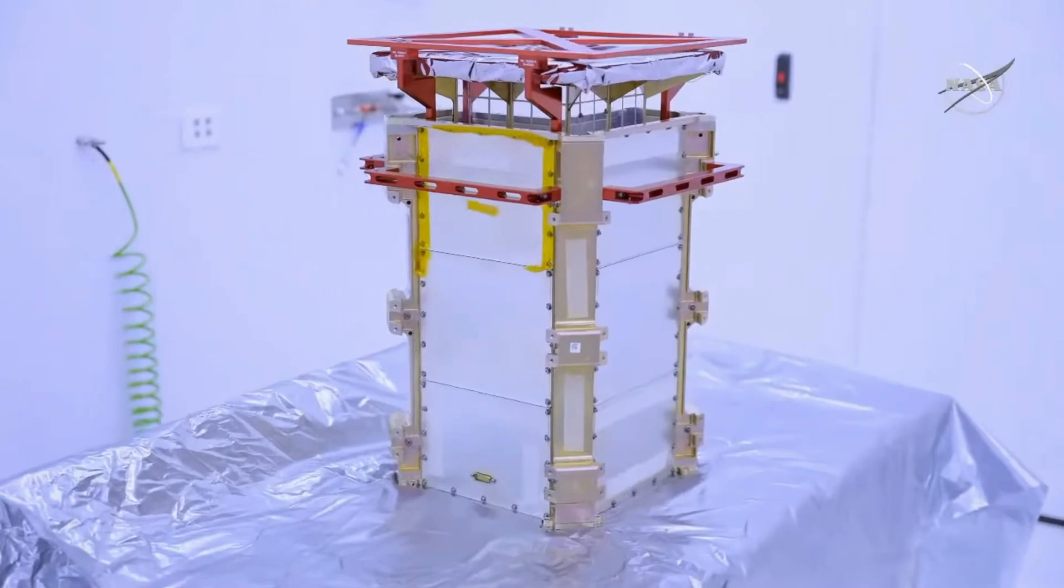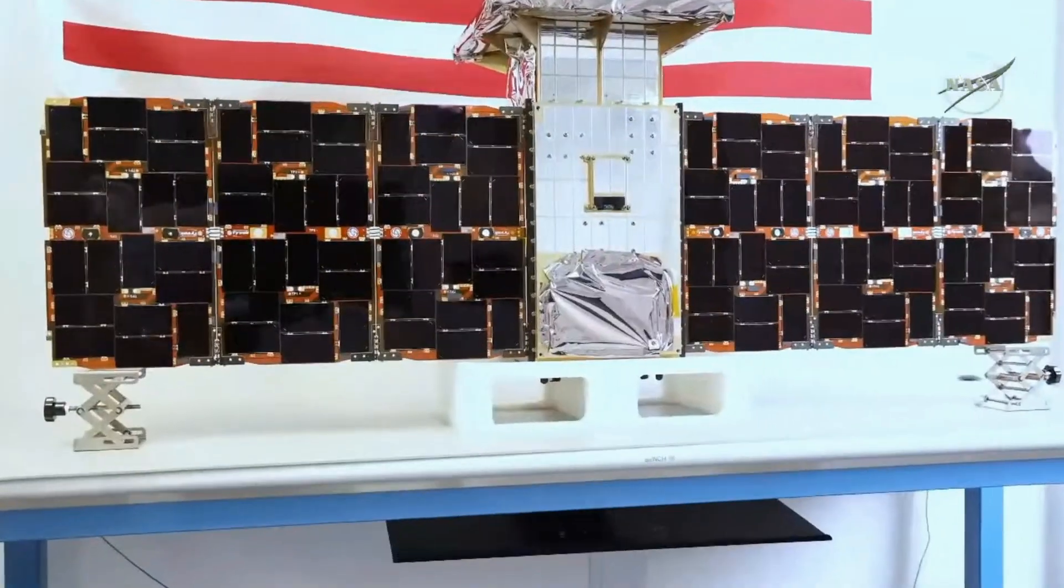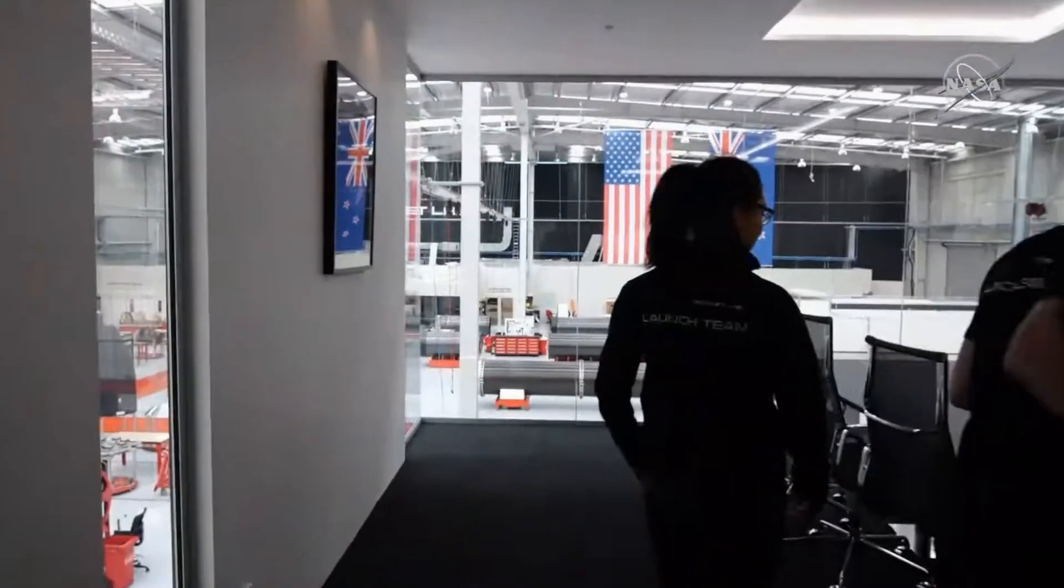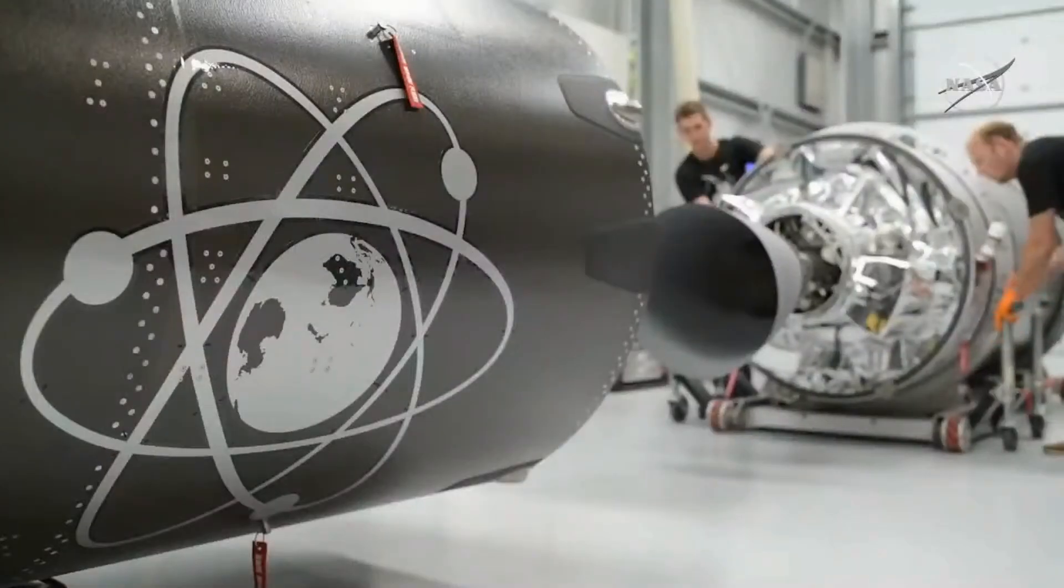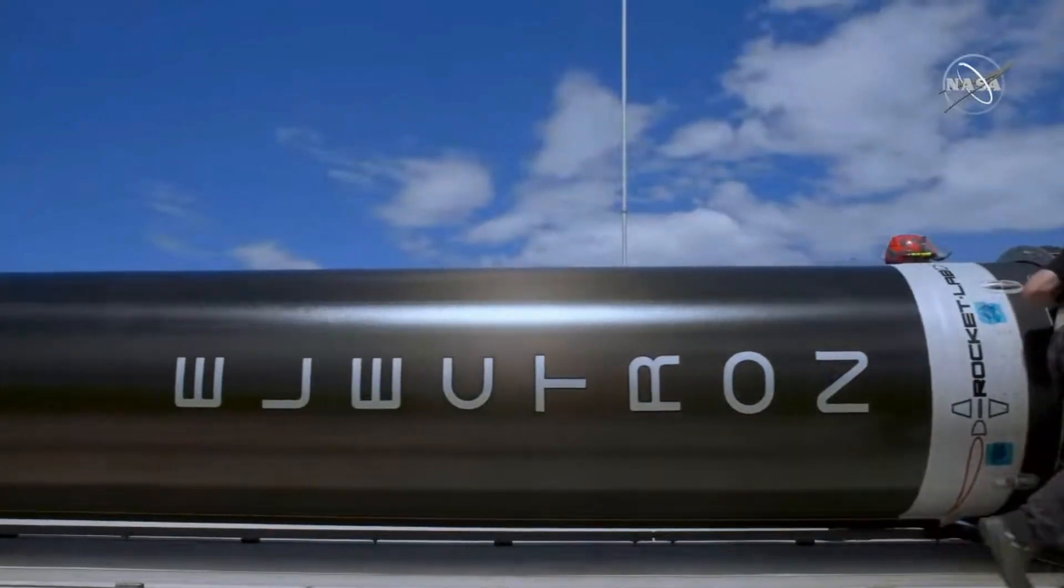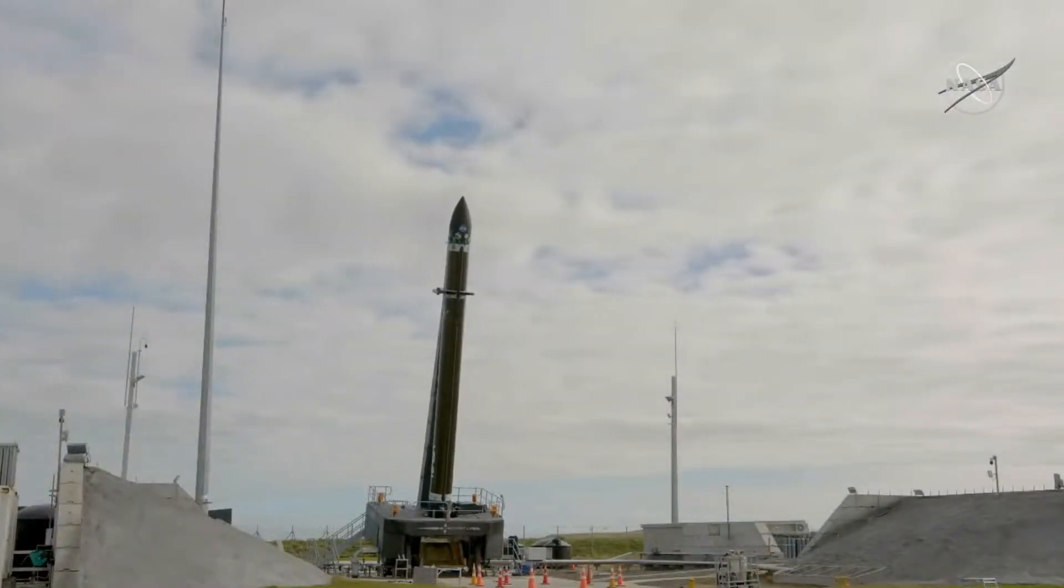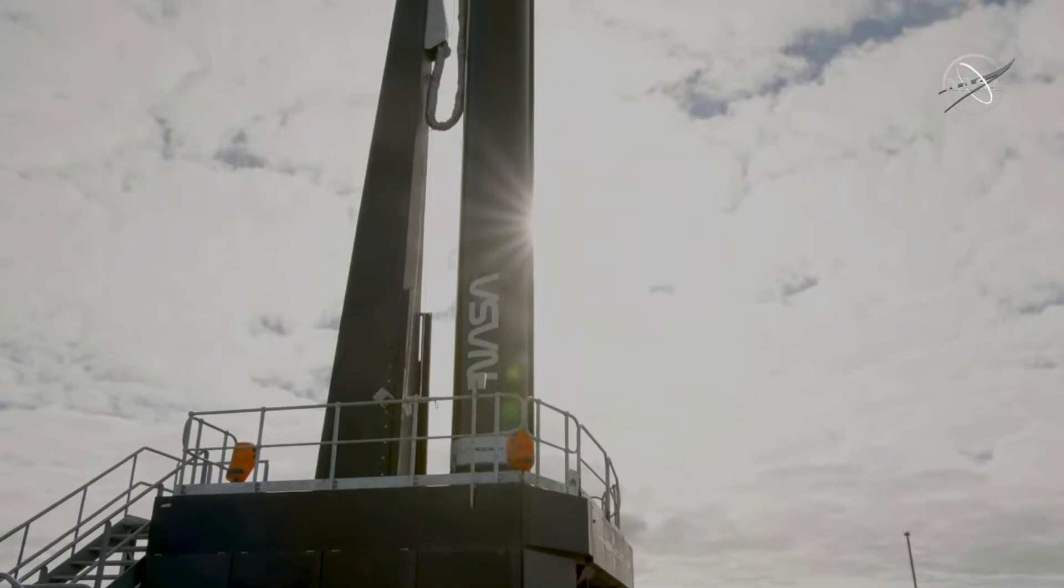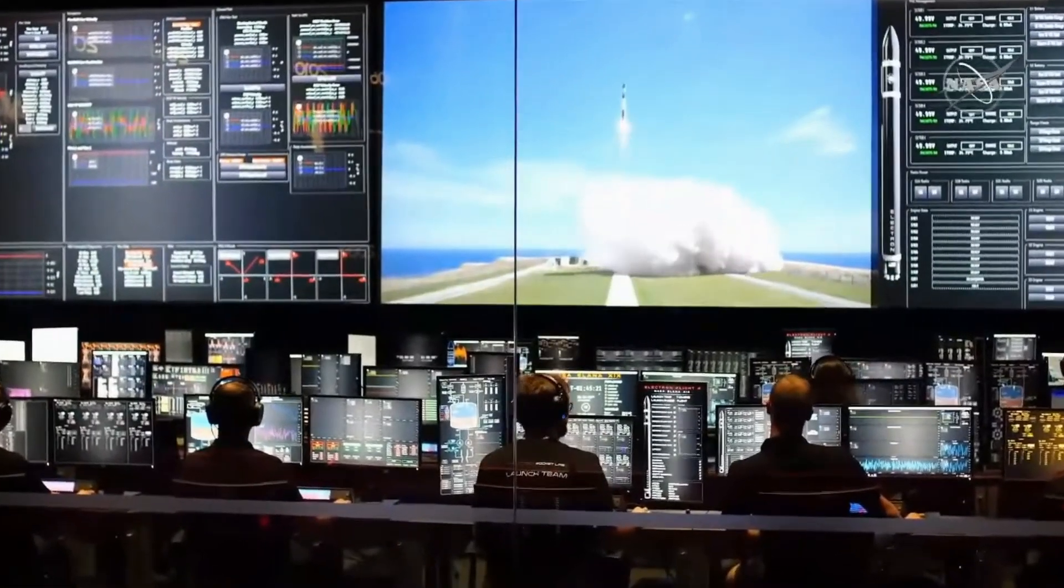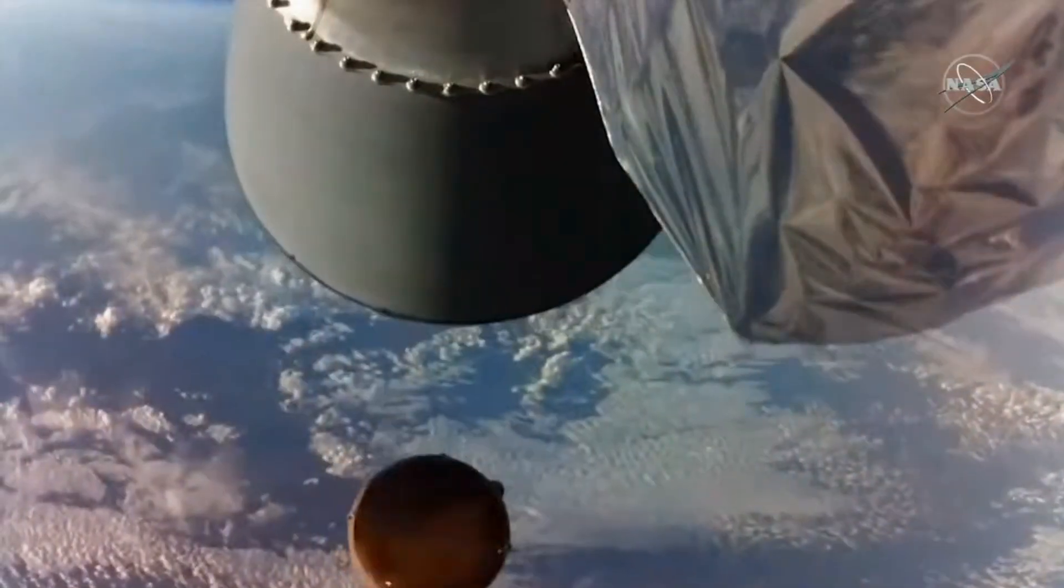Hello, it's Scott Manley here. This week Rocket Lab's Electron took off carrying a small spacecraft called Capstone. This is the first spacecraft that's going to be flown as part of NASA's Artemis program. It's going to go to the same orbit as the planned lunar gateway and basically demonstrate that spacecraft can indeed navigate autonomously in this region.